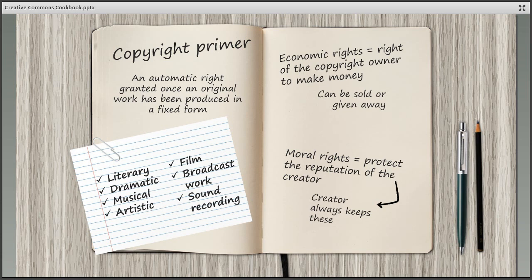Copyright is divided into two main areas: economic rights and moral rights, and it's important to understand the difference between these when dealing with Creative Commons. Economic rights are simply the rights to make money from a work by producing copies or renting it out, creating a new version or an adaptation, or showing a work to the public. These rights belong to the original creator unless they've been sold or given away. In contrast, the moral rights always stay with the creator and are designed to protect their reputation and give them the credit they're due for producing the work.